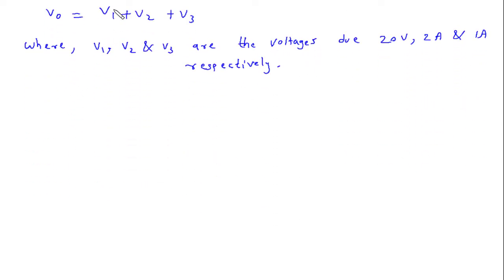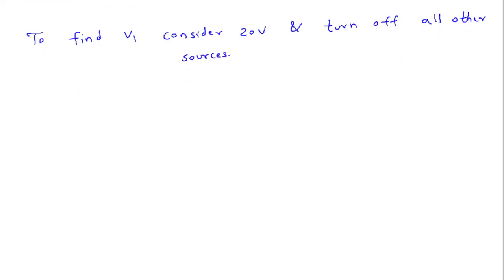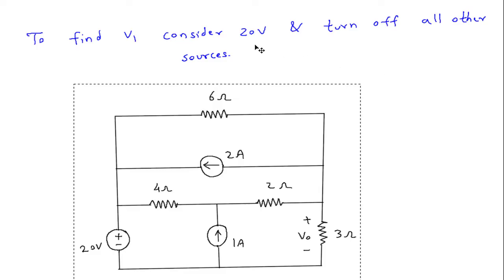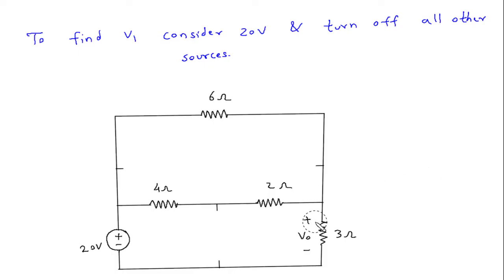To find V1, we will consider the 20V source and turn off all other sources. When we turn off the other sources, both current sources will be open circuited. The voltage at the output node will be V1, not Vo, because this is the voltage due to the 20V voltage source.